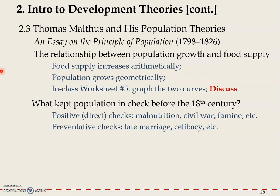Late marriage means getting married at a later age in life, and celibacy means voluntarily abstaining from marriage or sexual relations. These ways indirectly reduce the number of people in the world.